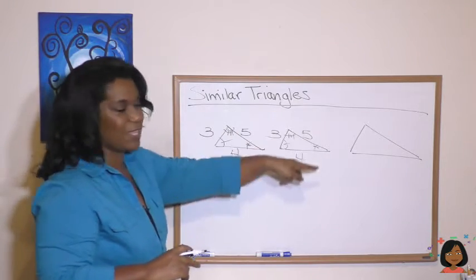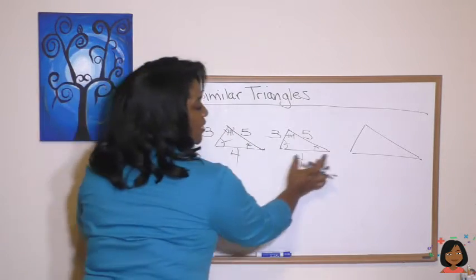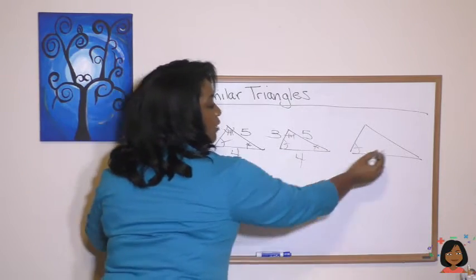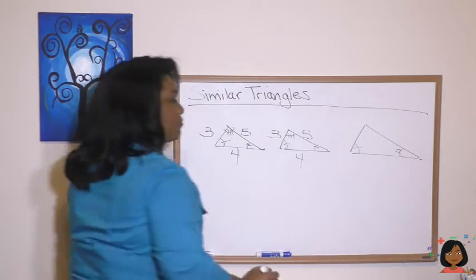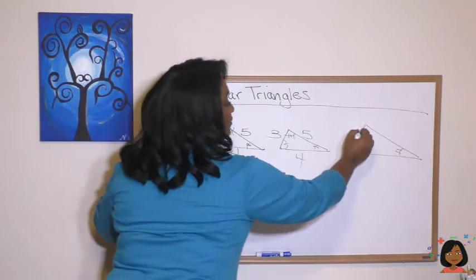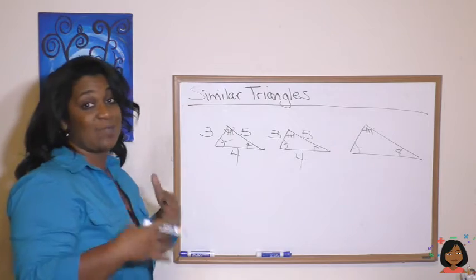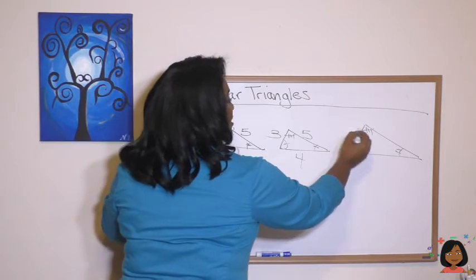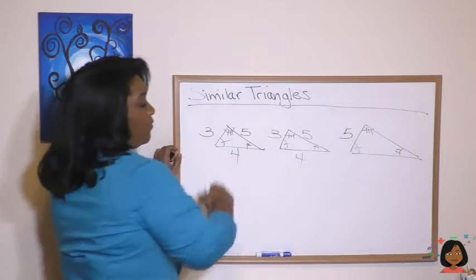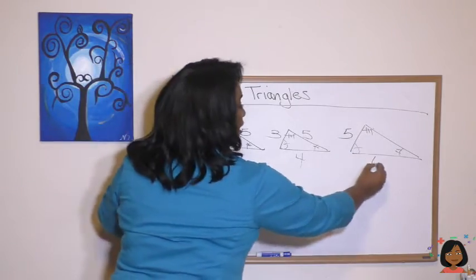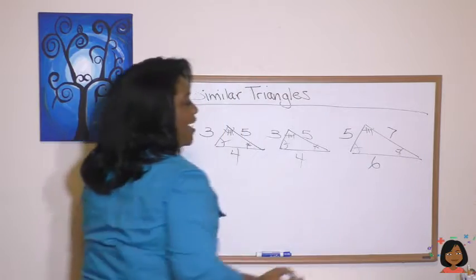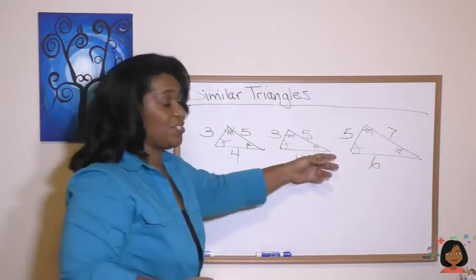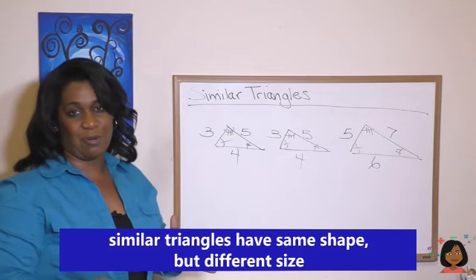Let's go over to this guy. Let's compare these two triangles. Let's say it had the same angle measurements here and here. Okay, and even in the third one, right? So it has the same shape, but instead of a 3, this side is actually a 5, this side is actually a 6, and this side is actually a 7. So same shape, different size. These two are called similar triangles.